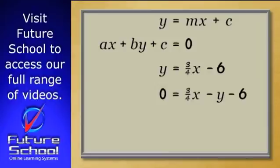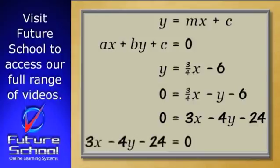Now we need to multiply through by 4 to remove the fraction. This leaves us with 0 equals 3X minus 4Y minus 24. Turn that around so the zero is on the opposite side and the equation is now in general form.